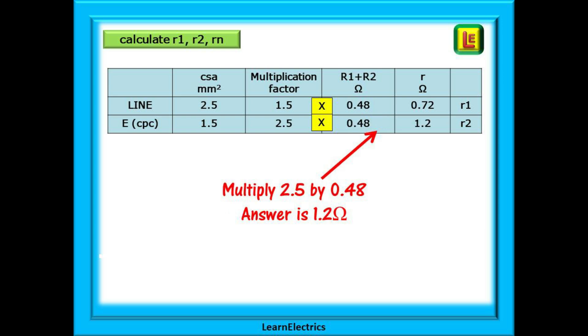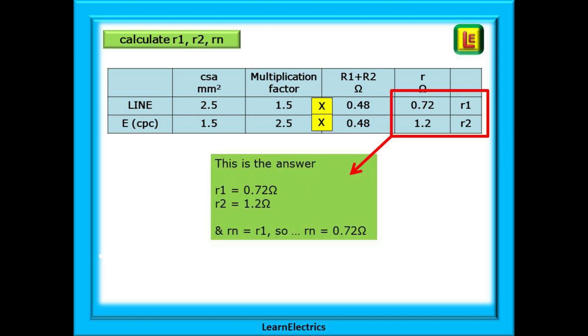Now, the CPC row. Multiply 2.5 by the same 0.48, and we have an end-to-end resistance of 1.2 ohms for little R2. And that is it.